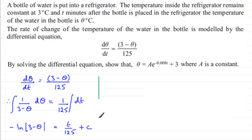Now what I need to do next is to get rid of this negative sign. Don't like it in front of this natural log here, so I'm going to multiply both sides through by negative 1. So we're going to get the natural log then of the mod of (3-θ) equals minus t over 125 minus the constant of integration.